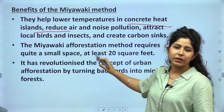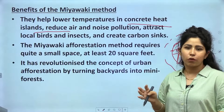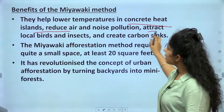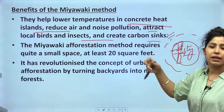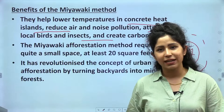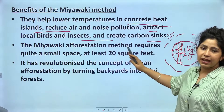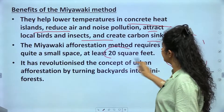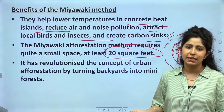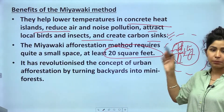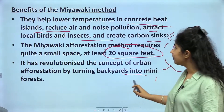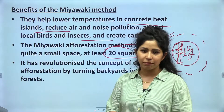The Miyawaki forest can reduce air and noise pollution, attract local birds and insects, create carbon sinks, and raise oxygen levels in the city. This afforestation method requires just a minimum of 20 square feet — basically the size of one large room. It has revolutionized the concept of urban afforestation by turning backyards into mini forests. If there are any doubts with regards to this, let me know in the chat section.